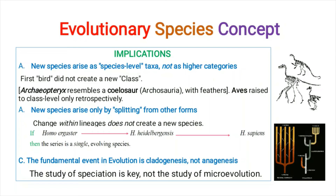Changes within lineages — anogenesis — do not create new species. For example, if Homo ergaster gave rise to Homo heidelbergensis, and Homo heidelbergensis gave rise to Homo sapiens, this is an example of continuous change within a single lineage. This is said to be an evolving species, but new species arise only by splitting from other forms.